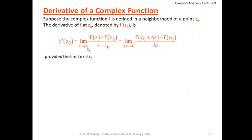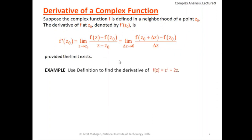Here z is a neighborhood complex point of the fixed complex number z₀. This limit should exist for every path along which z approaches z₀, or equivalently every path through which Δz approaches 0. This path can be a horizontal straight line, vertical straight line, any other straight line, or it can be a curved line — parabolic, cubic, and so on. Along any such path, if this limit exists, then we say the derivative exists.